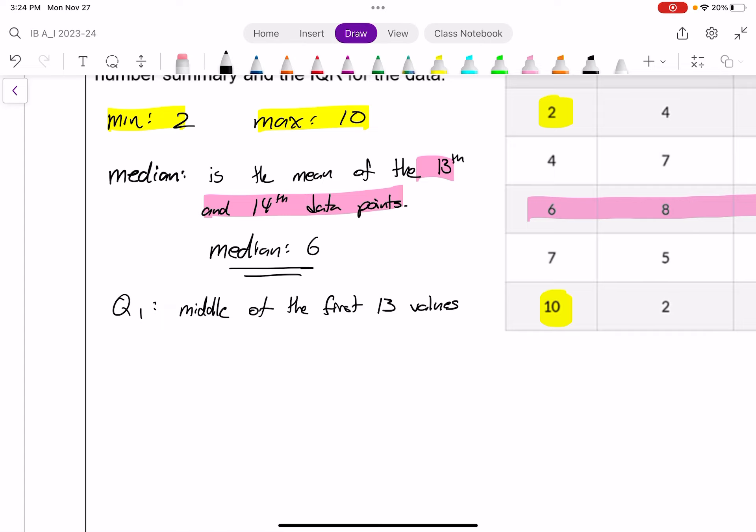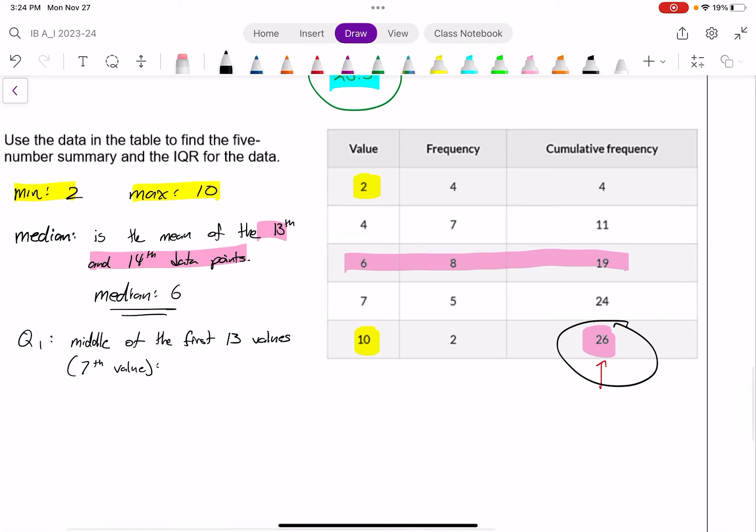If you think of 13 values listed out in order, the one in the middle will be the seventh value. And so what is the seventh value? Well, if I look at my cumulative frequency table here, I know it must be in this row right here. Because by the time I finish these seven fours, I've listed out 11 values in total. So the seventh must be in there. So the Q1 must be seven.